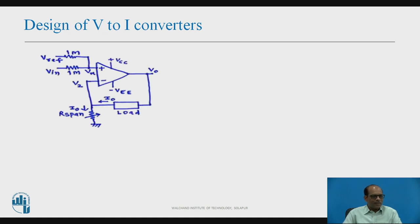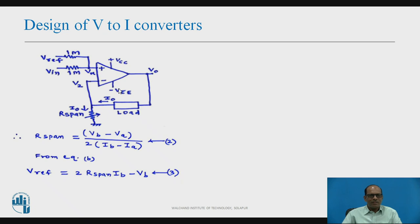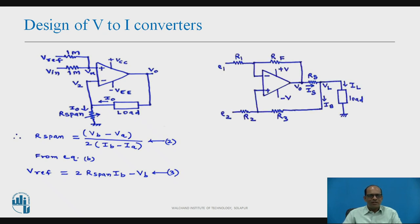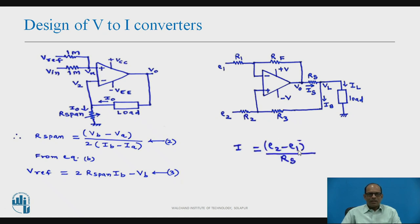The third type is V to I converter with offset. The circuit has R_span, load, φ_in, φ_reference, +Vcc, and −Vee. The design equations are: R_span = (φ_B − φ_A) / (2 × (I_B − I_A)) and φ_reference = 2 × R_span × I_B − φ_B. The fourth V to I converter is the differential V to I converter, with E1, E2, and resistances, where I_L = (E2 − E1) / R_S.